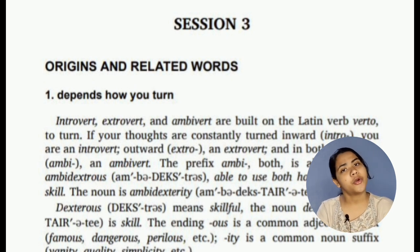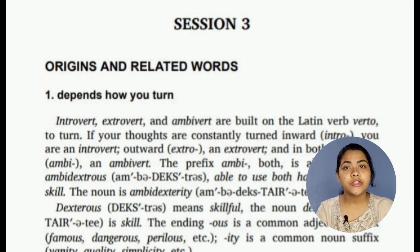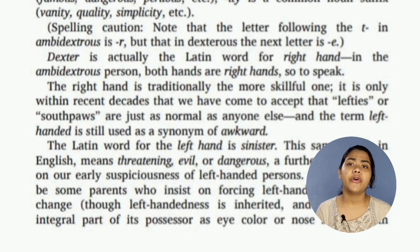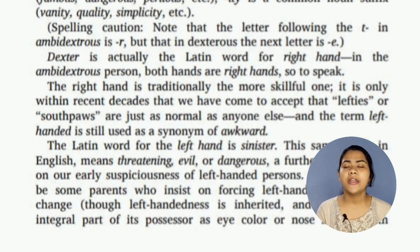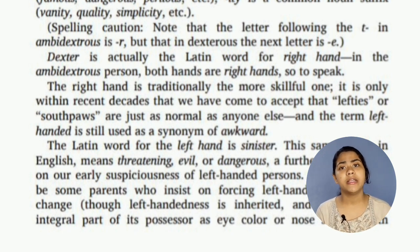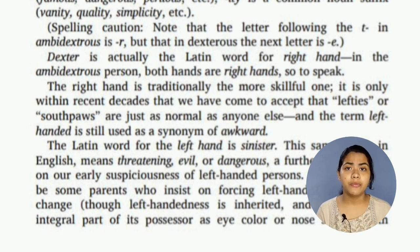'Dexter' is the Latin word for right hand. In the ambidextrous person, both hands are right hands. Then 'sinister' — the Latin word for the left hand is sinister. So dexter means right hand and sinister means left hand. In English, this same word 'sinister' means threatening, evil, or dangerous.